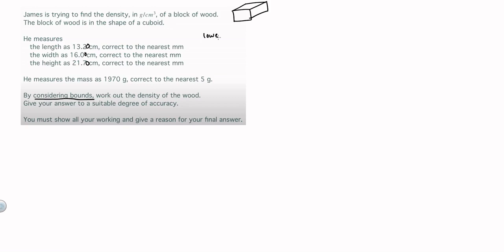First I'm going to find the lower bounds and then the upper bounds. The lower bound — if you take away 5p — gives you 13.15. For the next one, think of it like 16 pounds, so taking away 5p gives 15.95, and this one will be 21.65. For the upper bounds, adding 5p gives 13.25, 16.05, and 21.75. I'll double-check these values because if you get them wrong here it'll have a knock-on effect later.